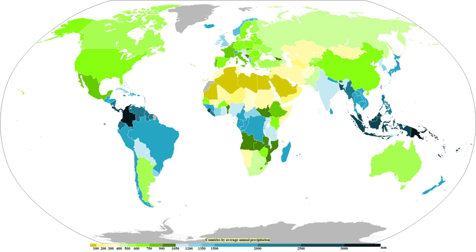Intensity and duration of rainfall are usually inversely related: high-intensity storms are likely to be of short duration and low-intensity storms can have a long duration. Rain drops associated with melting hail tend to be larger than other rain drops. The METAR code for rain is RA, while the coding for rain showers is SHRA.